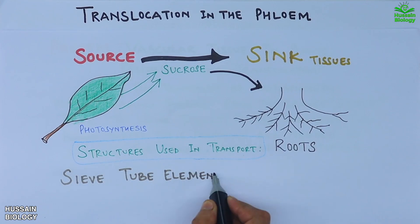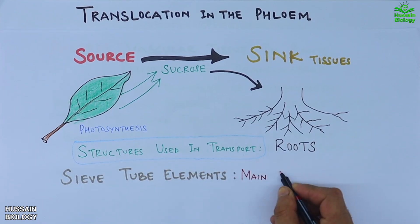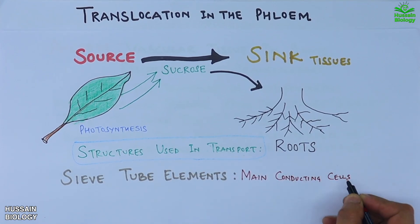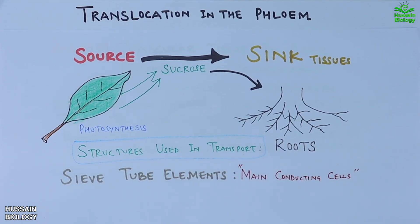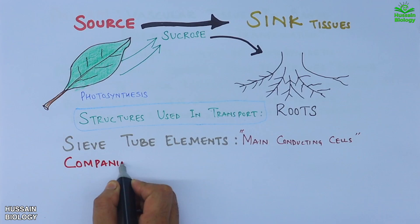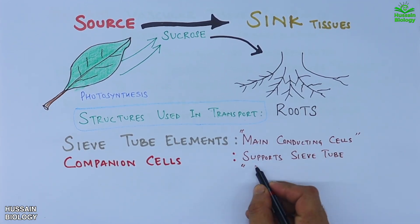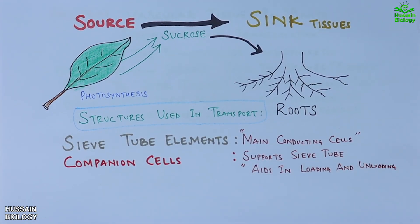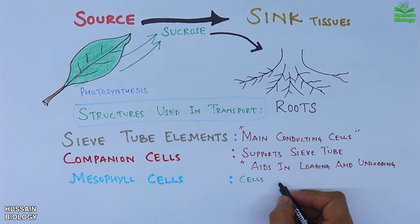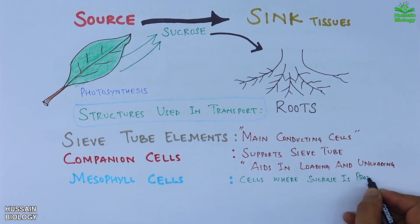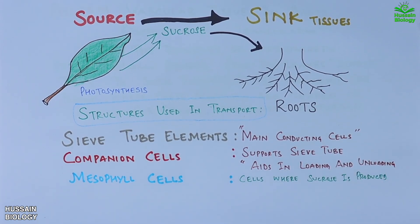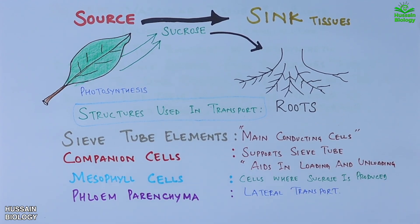We have the sieve tube elements — these are the main conducting cells arranged end to end. Second are the companion cells that support sieve tubes and help in loading and unloading sugars. Third are mesophyll cells, where sucrose is produced. Fourth is phloem parenchyma, which aids lateral transport. Now let's get directly to the mechanism of translocation.